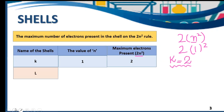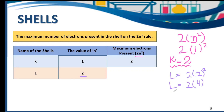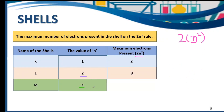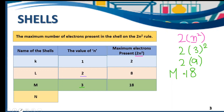For L shell, n equals 2. Applying 2n²: 2 times 2 squared equals 2 times 4, which is 8. For M shell, n equals 3: 2 times 3 squared equals 2 times 9, which is 18. For N shell, n equals 4: 2 times 4 squared equals 2 times 16, which is 32.